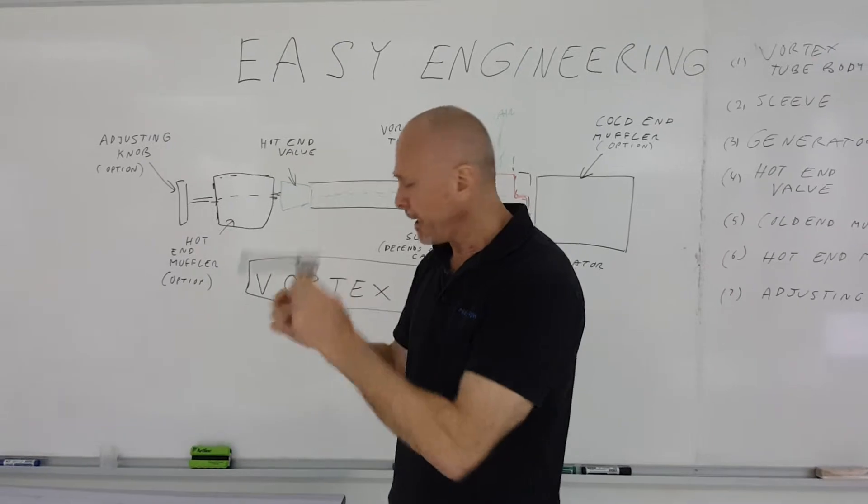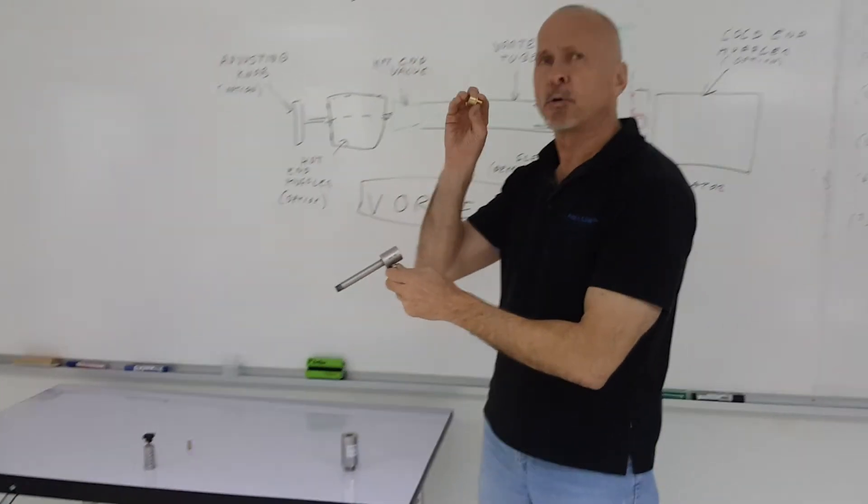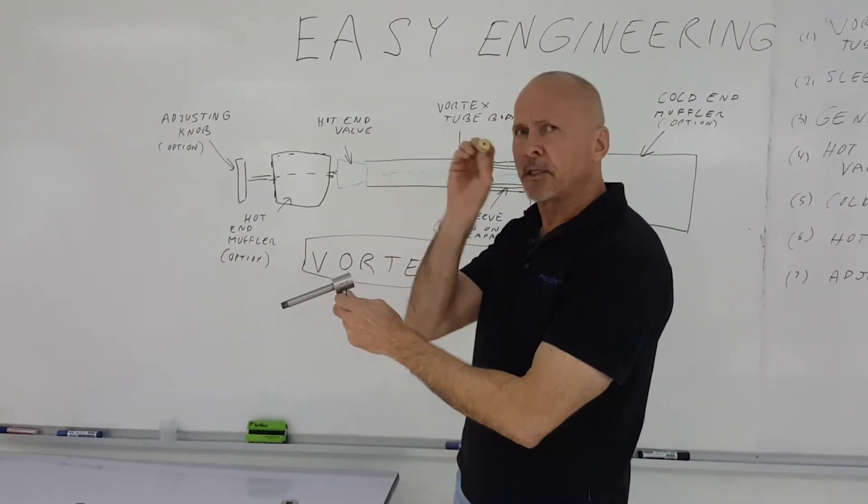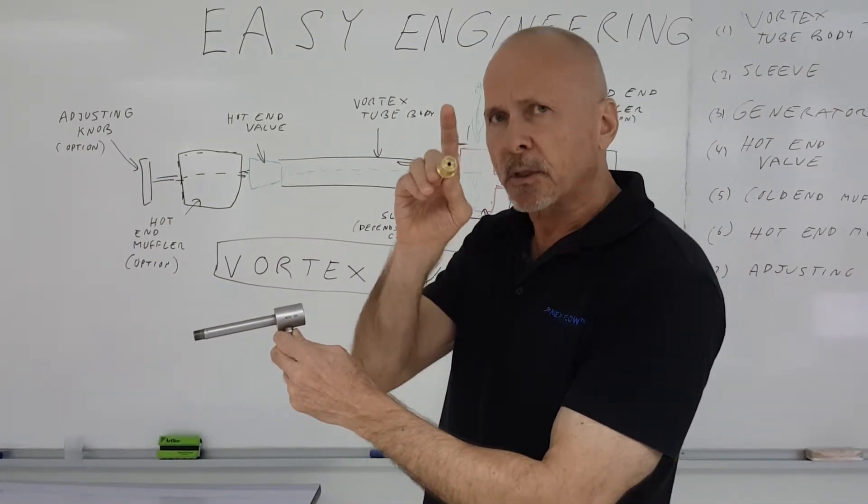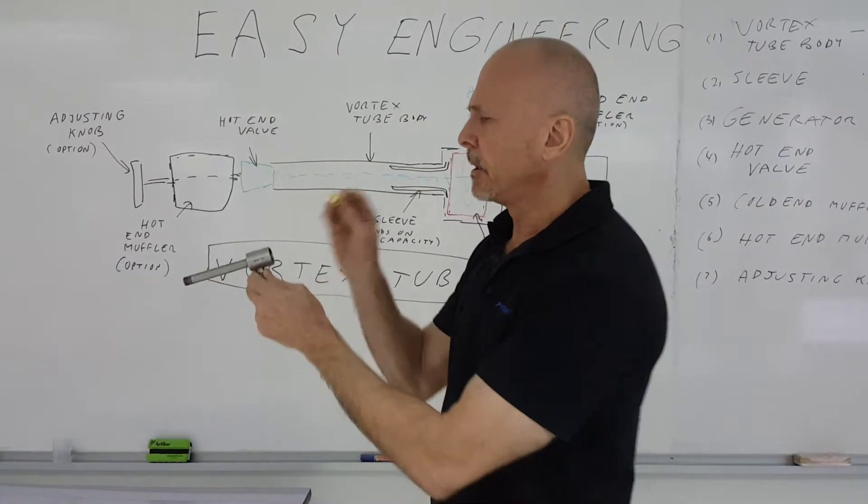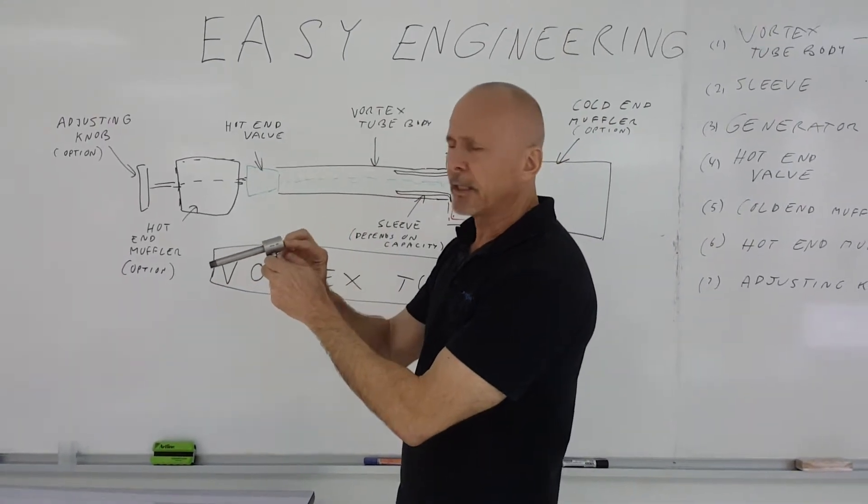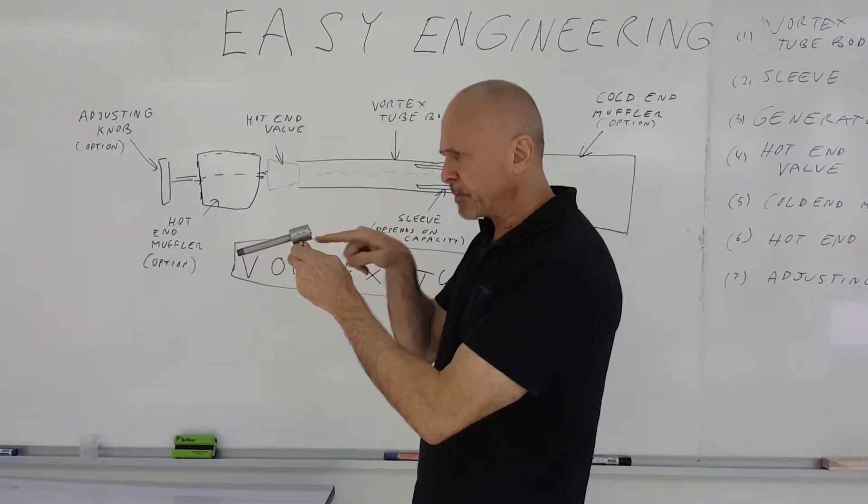So it includes a body. Into that body goes a generator. Now take a look at the generator really closely, you'll see that there's slots in it. This is what causes the compressed air to spin. So the generator is inserted like this, the compressed air is spinning, it spins one way.